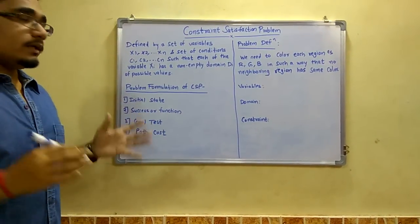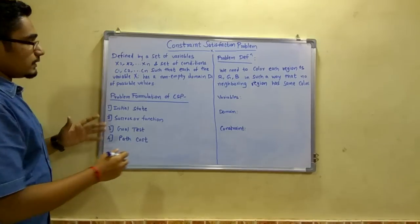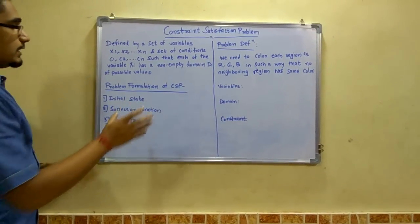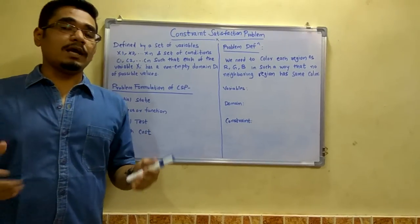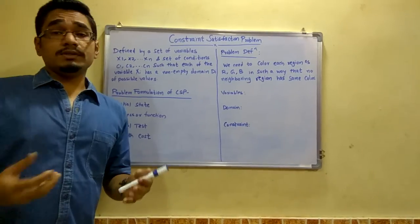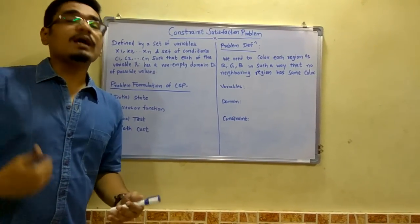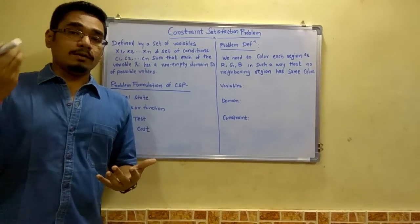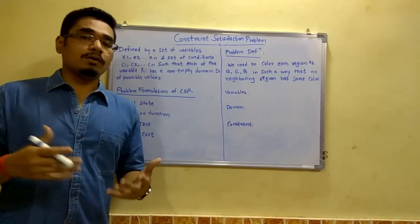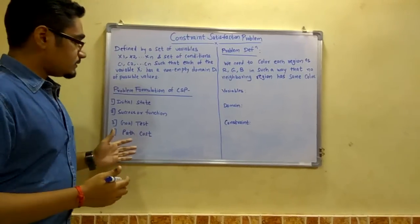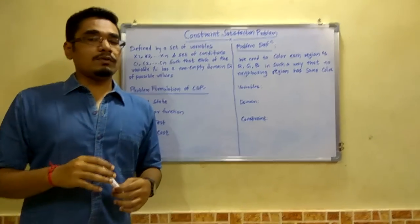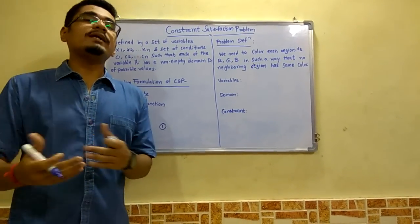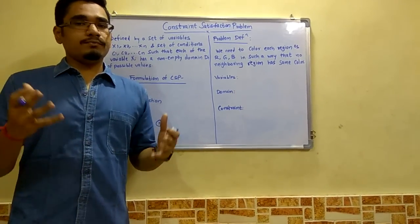Next we will define the problem formulation — the manner in which the CSP is solved. There are four points: first, the initial state, which is where we start solving the problem. Second, the successor function, chosen so it does not affect the next value assigned. Third, the goal test, which checks whether the satisfaction constraint has been completed and we have reached the goal state. Fourth, path cost, which is the value assigned to solve the problem, with a minimum value of 1.